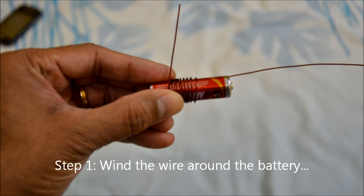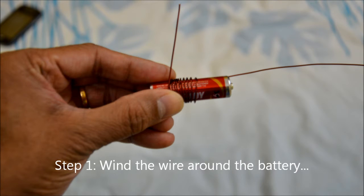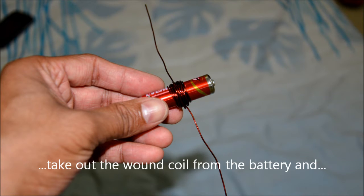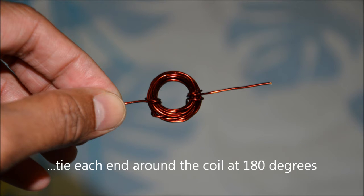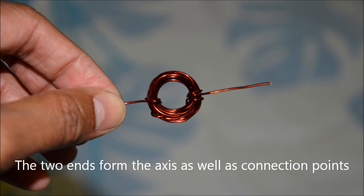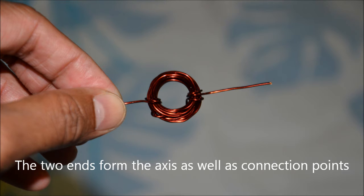Step 1. Wind the copper wire around the battery and slide it out carefully and tie each loose end around the coil 2-3 times so that the winding doesn't loosen up. These two ends tied at 180 degrees form the axis for rotation.